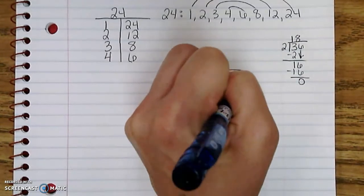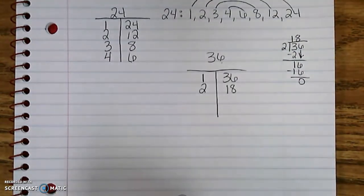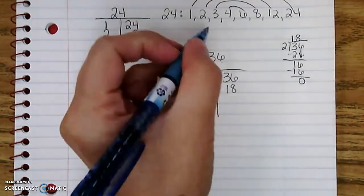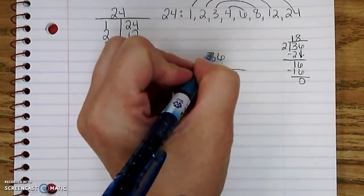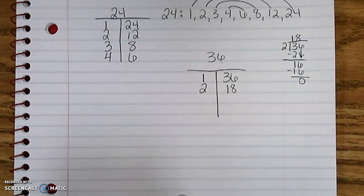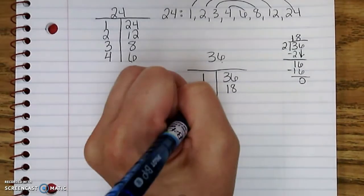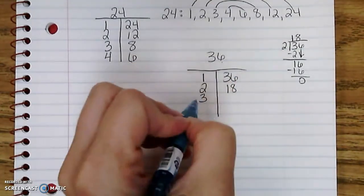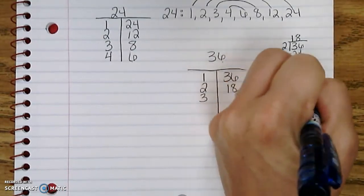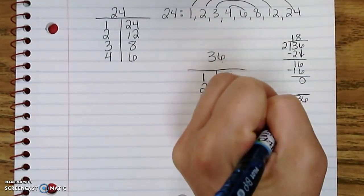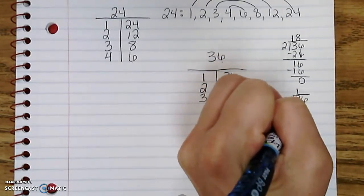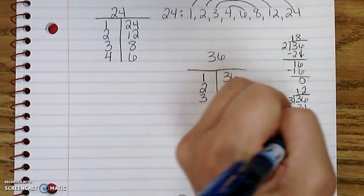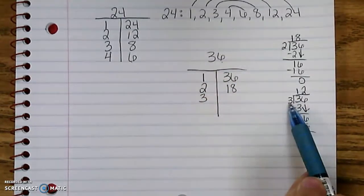Then I go, is 3 a factor of 36? Well, if I add these together, 3 plus 6 equals 9, and 9 is a factor of 3, so 36 must be a factor of 3. So 3 is a factor, and if I don't know what it is, again I would divide. 3 goes into 3 one time, 1 times 3 is 3, that's a 0, bring down my 6, 3 goes into 6 two times, 2 times 3 is 6. So my factor pair is 3 times 12.